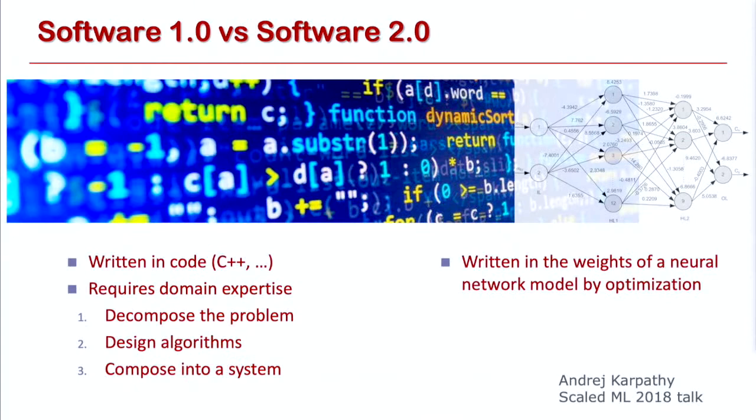This idea of training models using neural networks and replacing conventional algorithms has been coined Software 2.0, coined by Andrej Karpathy, who was a PhD student here at Stanford. When I first heard the term, I thought it was a little pretentious, but it accurately captures the idea that instead of developing manual algorithms in the traditional way software has been developed, now what you're doing is using data to train models. Training these models is often easier than building algorithms manually.